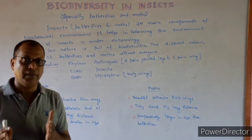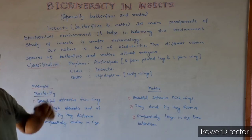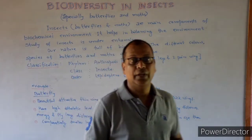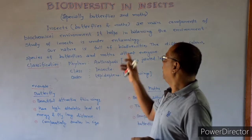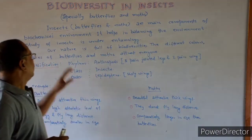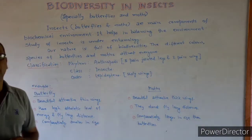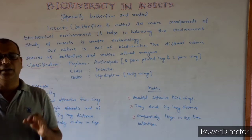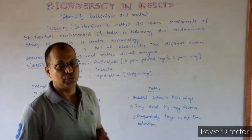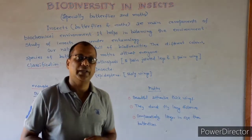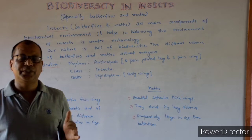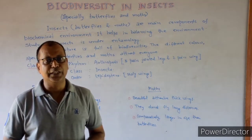Insects — the butterfly and moth are the main component of the biochemical environment. They help in balancing the environment. The study of insects falls under entomology, which is the branch of zoology where we study about the different types and different species of insects.